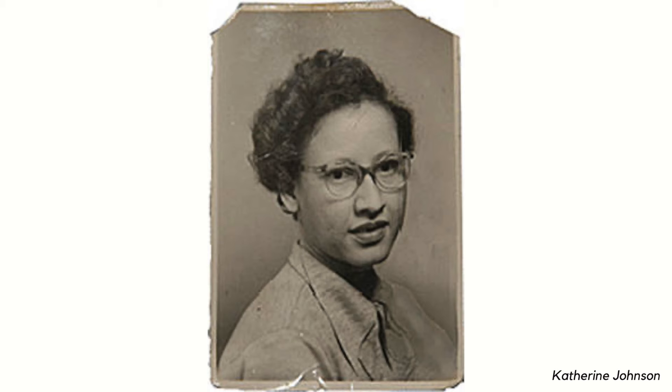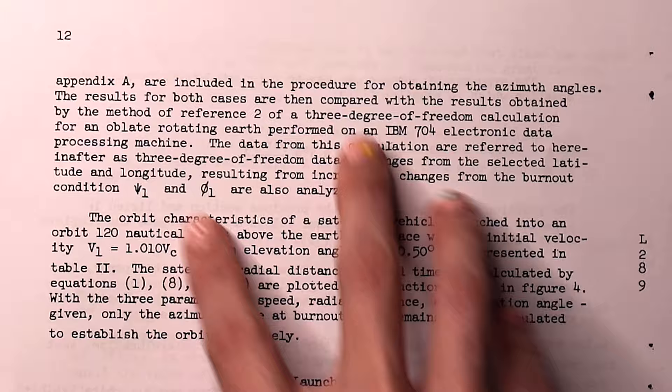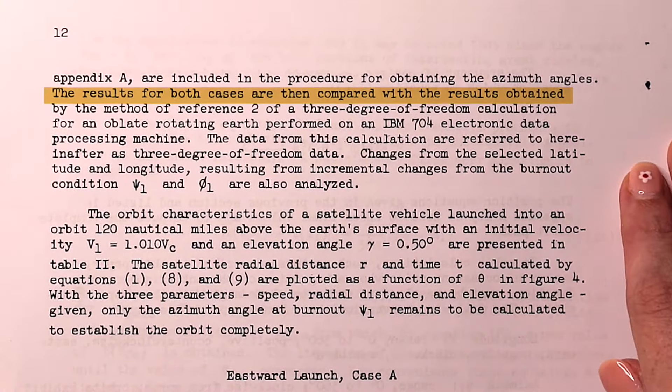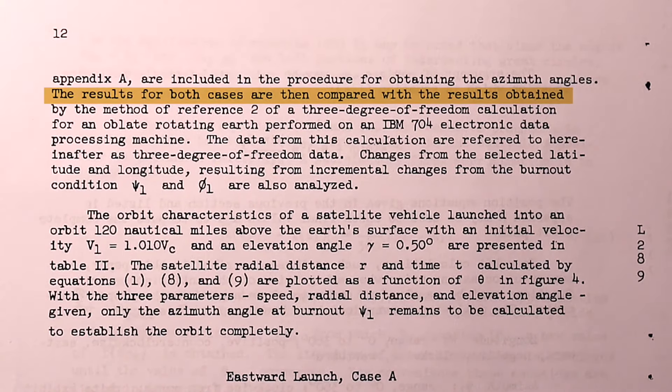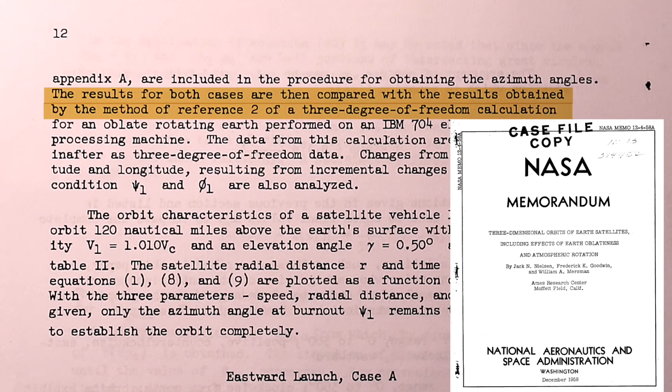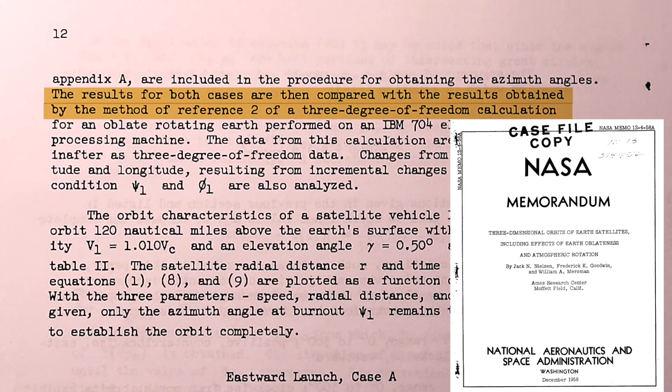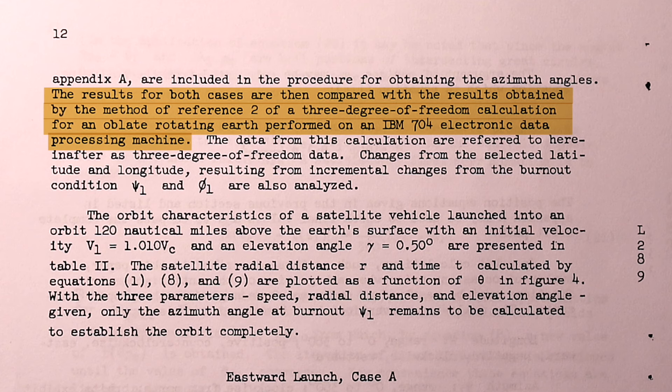These calculations were done by hand, likely by Katherine Johnson herself, but then it says here that the results for both cases are then compared with the results obtained by a method of a three degree of freedom calculation performed on an IBM 704 electronic data processing machine.